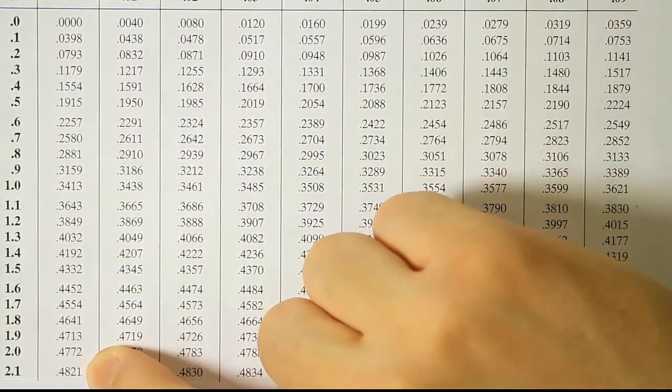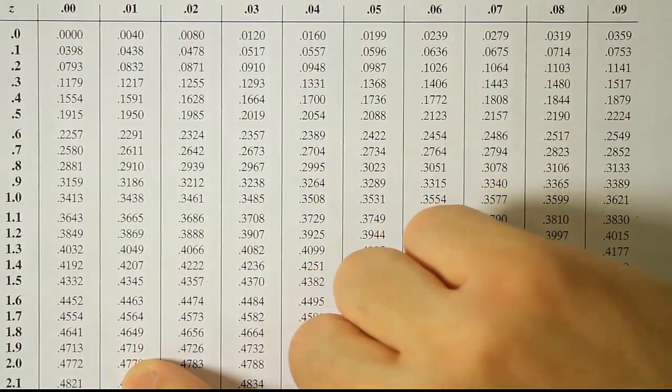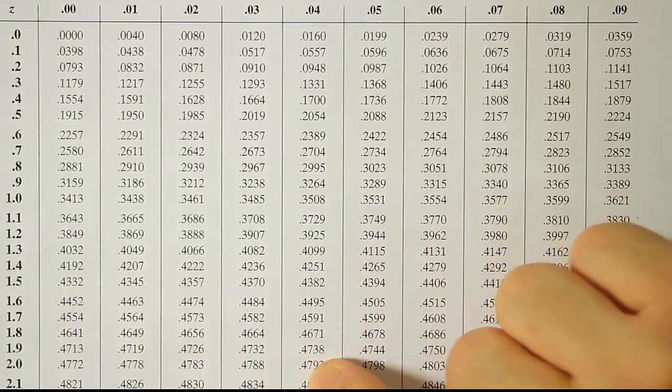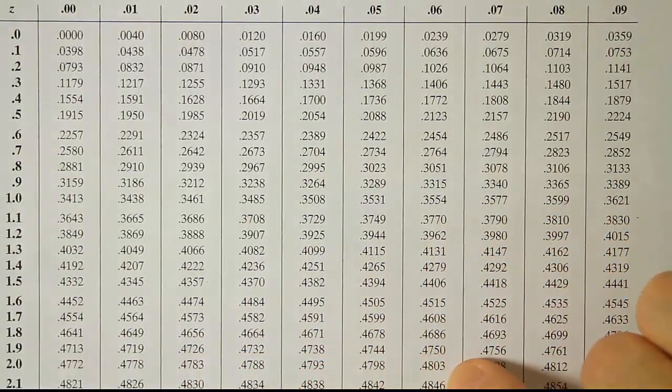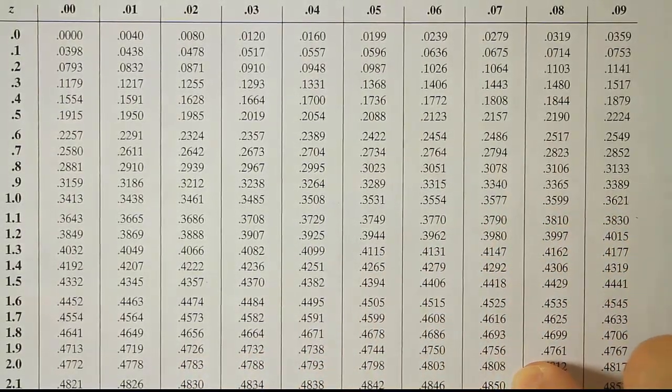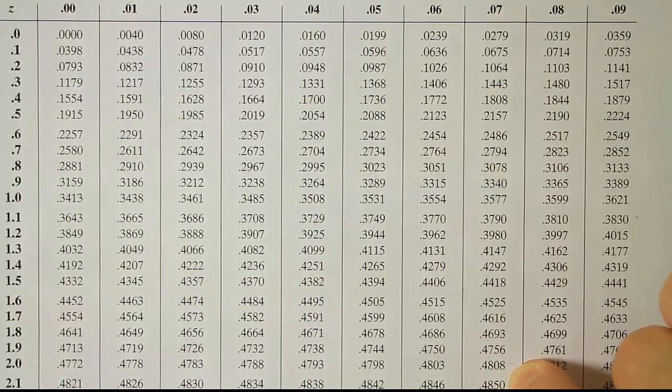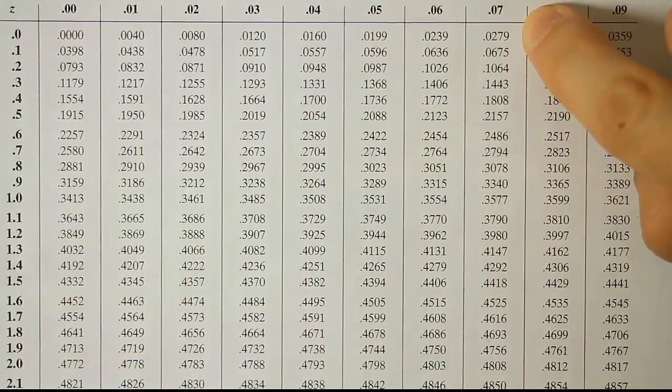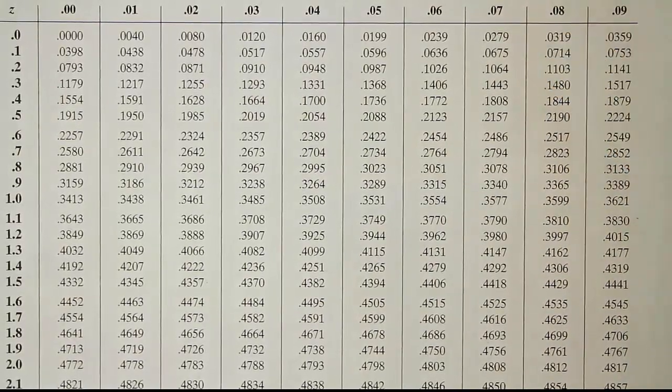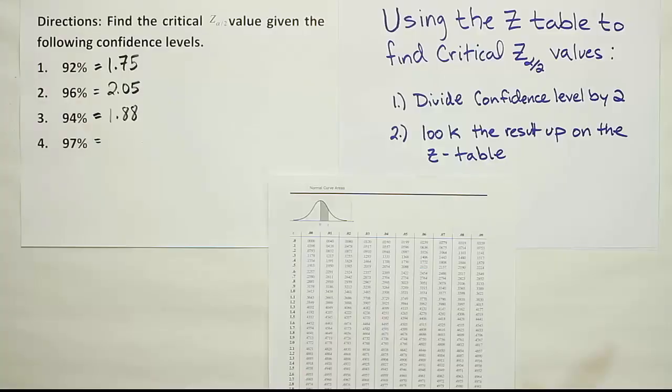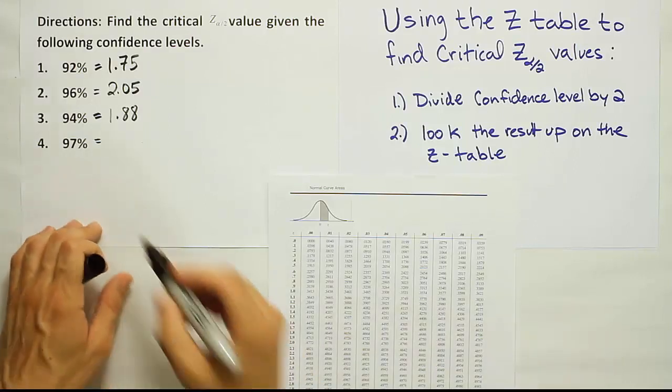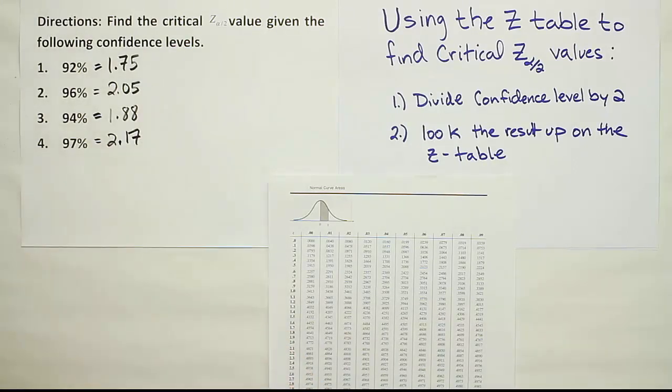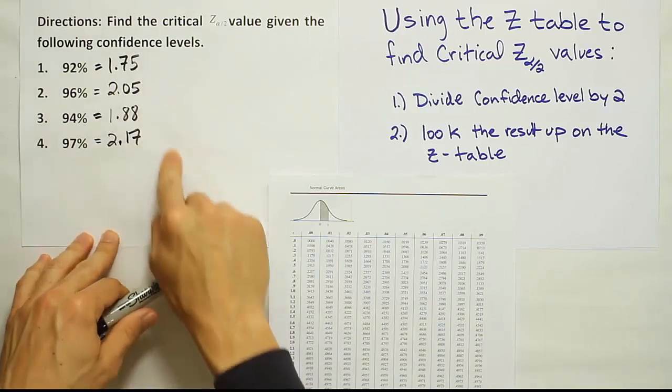And then if we go across from 0.4821, we'll be able to see that we have 0.4826, 0.4830, 0.4834, 0.4838, 0.4842, 0.4846, 0.4850. The exact number we're looking for, that's nice. That's 2.17. 2.17 is the z-score we need. We get 2.17 as our final critical z-value for the list. There are your four answers.